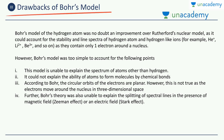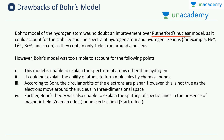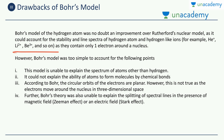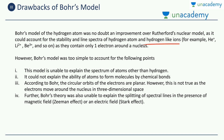Now let us look at some drawbacks of Bohr's model. Bohr's model of the hydrogen atom was an improvement over Rutherford's nuclear model, as it could account for the stability of atoms and explain the discrete line spectra of hydrogen as well as hydrogen-like ions — such as He⁺, Li²⁺, and Be³⁺ — which contain only one electron around the nucleus. However, Bohr's model was too simple to account for more complex phenomena.